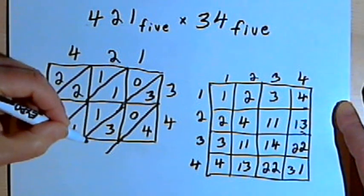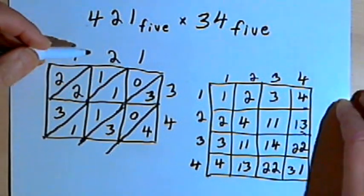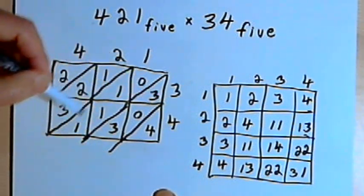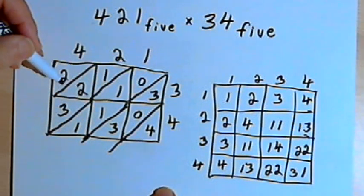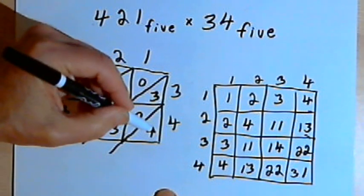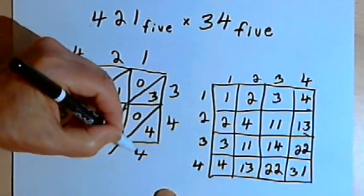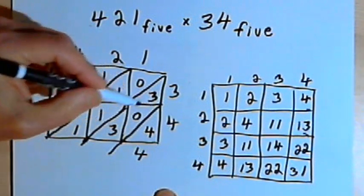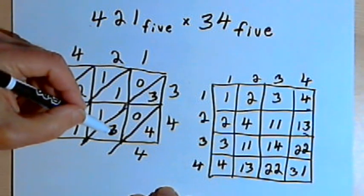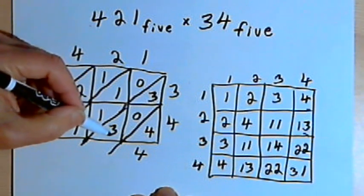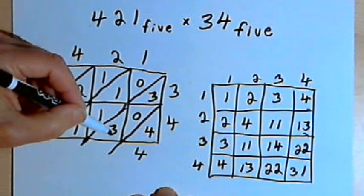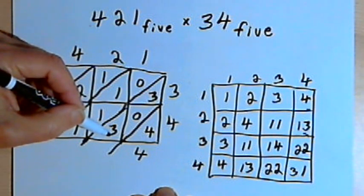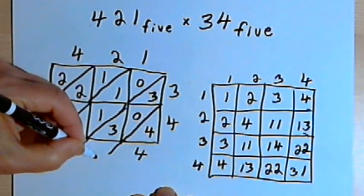And now all I have to do is add each of these diagonal columns to get my solution. So I'll have a 4. Then I'm adding a 3 and a 3. So adding 3 plus 3, I still have some work to do. I'll count up 3 more. 3, 4, 10, 11. So that's a 1.